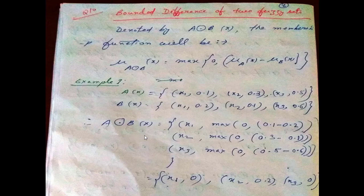A(X) ⊖ B(X): For X1, max(0, 0.1 − 0.2) = max(0, −0.1) = 0. For X2, max(0, 0.3 − 0.1) = max(0, 0.2) = 0.2. For X3, max(0, 0.5 − 0.6) = max(0, −0.1) = 0.